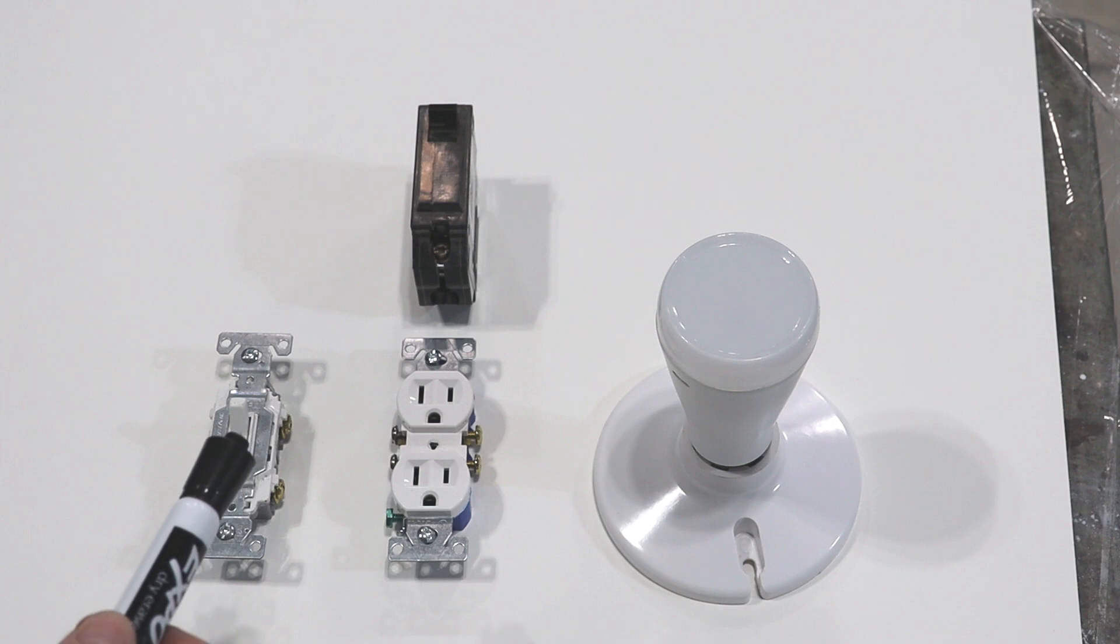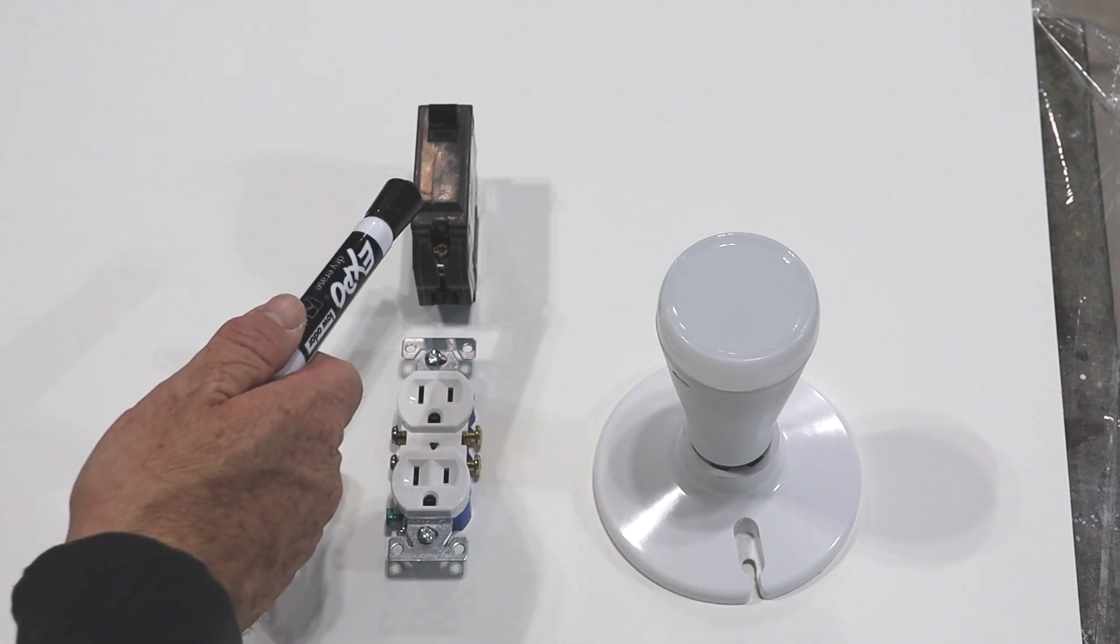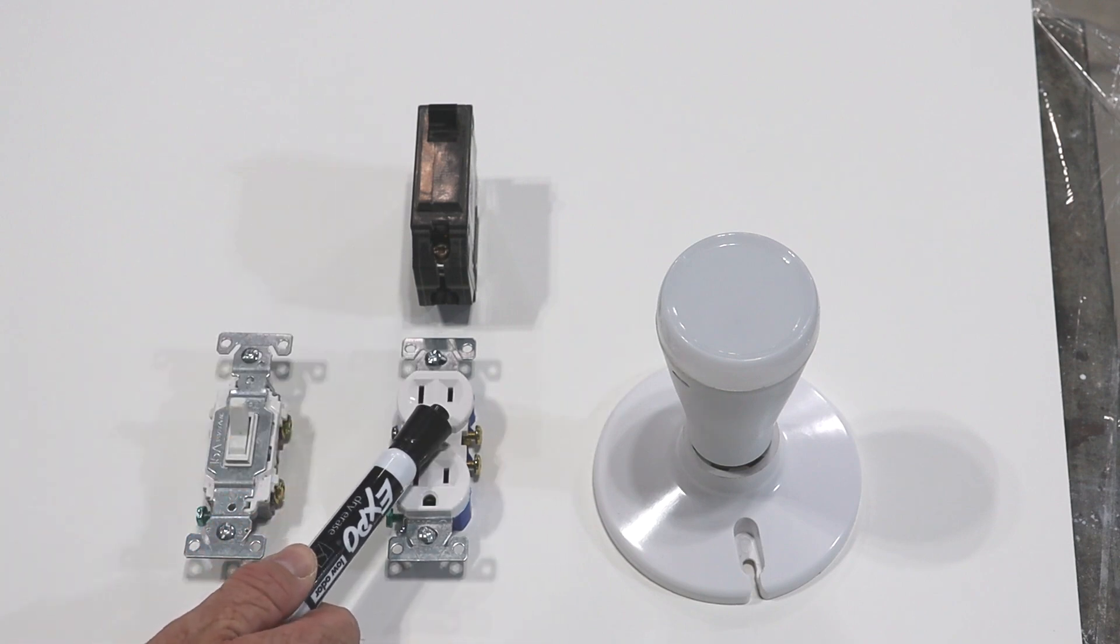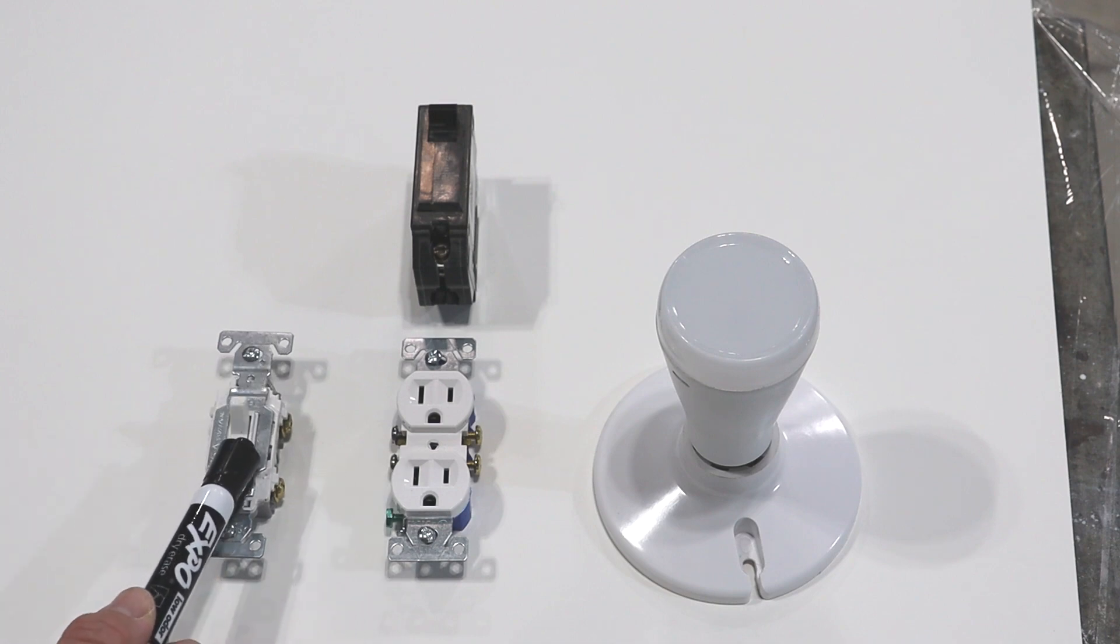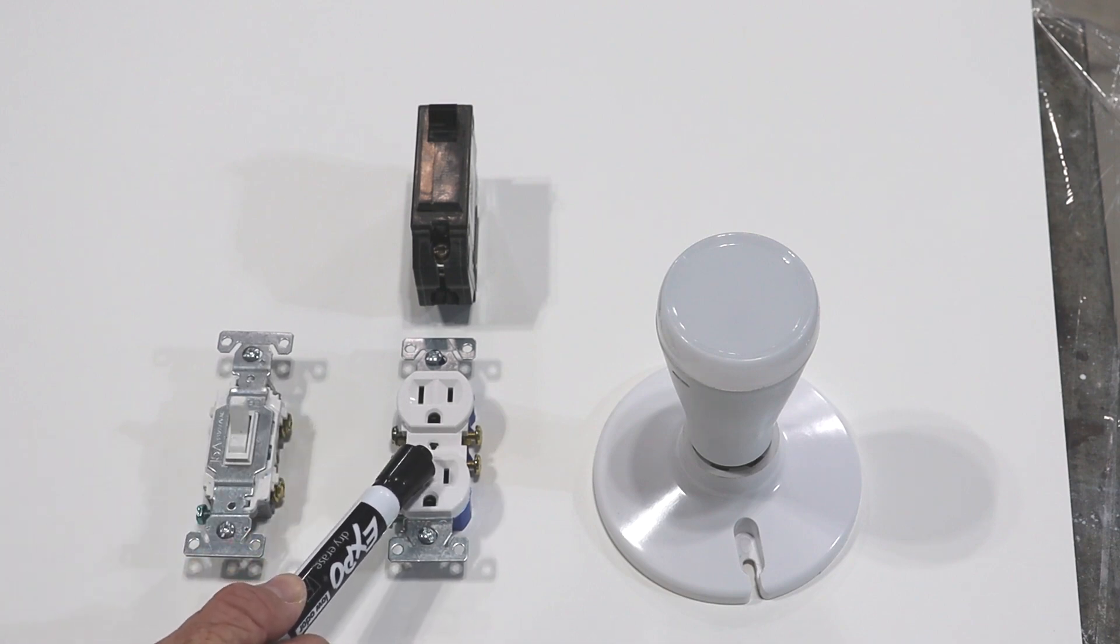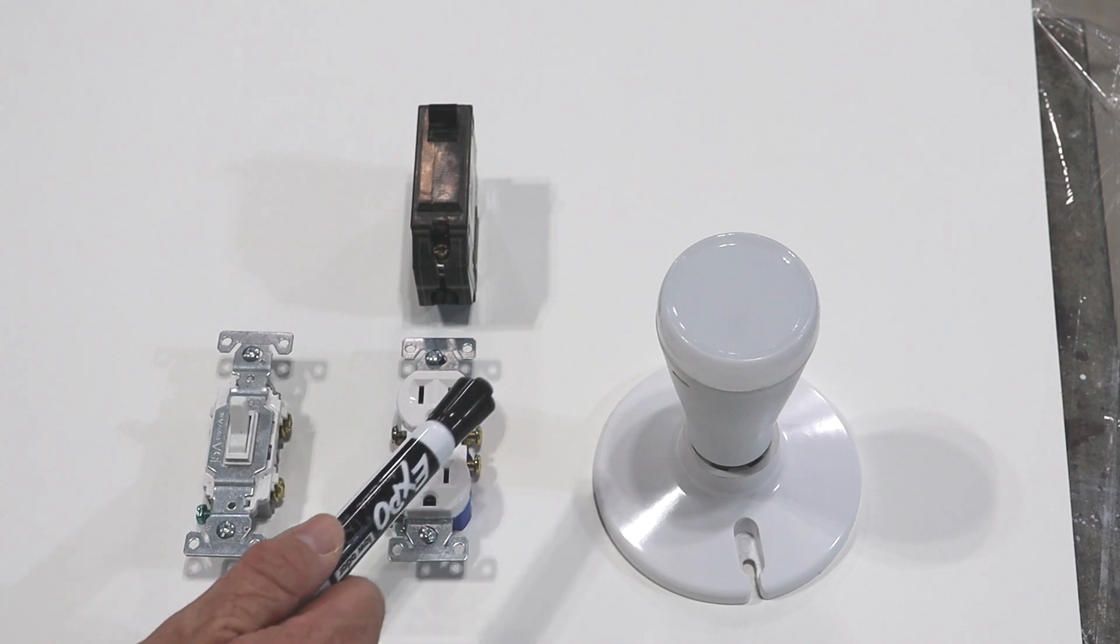So how the circuit works with grandma's lamp over in the corner is you have your breaker. Your breaker powers your outlet. Your outlet sends power to the switch. Your switch then sends power back to the outlet, and then the outlet powers the lamp over in the corner.